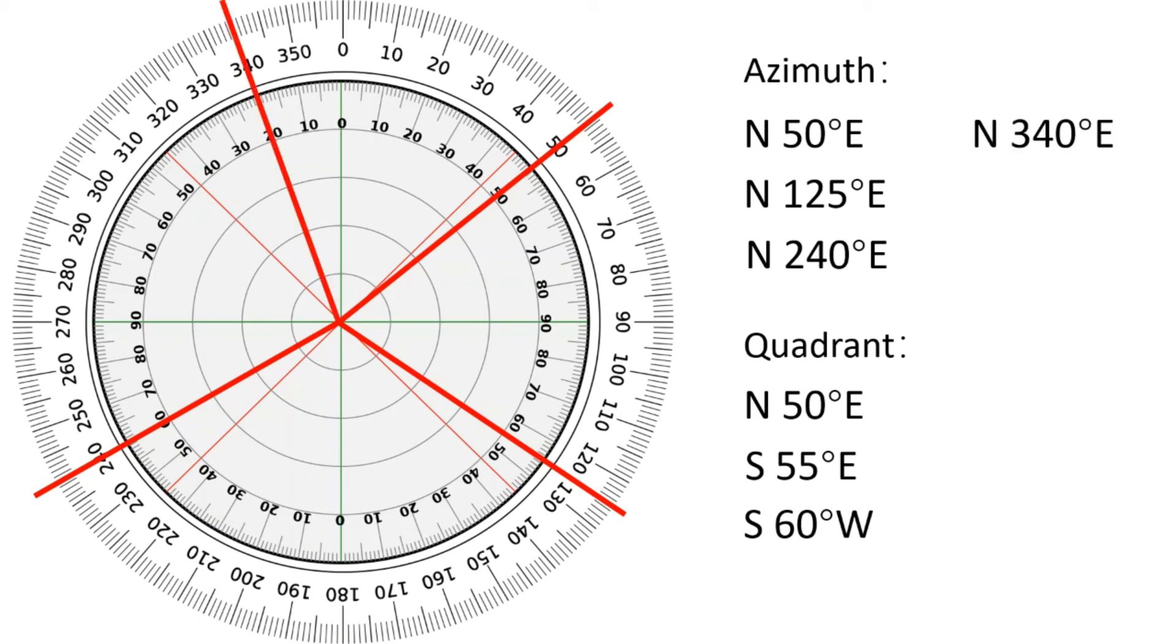What is the quadrant reading when azimuth reading is north 340 degrees east? It is north 20 degrees east. Hope you guys get benefits from this video.